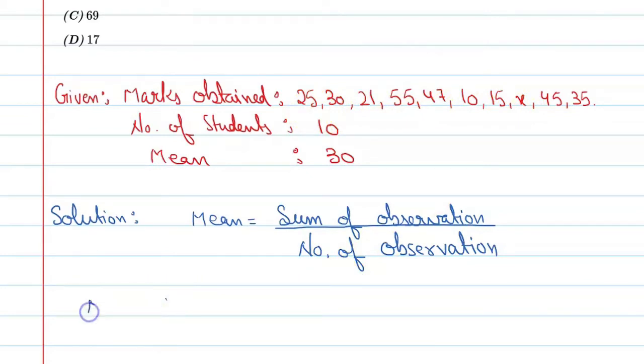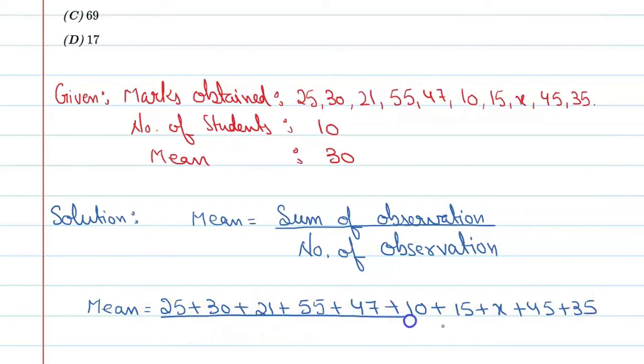You can say mean is equal to 25 plus 30 plus 21 plus 55 plus 47 plus 10 plus 15 plus x plus 45 plus 35, and the number of observations is 10.